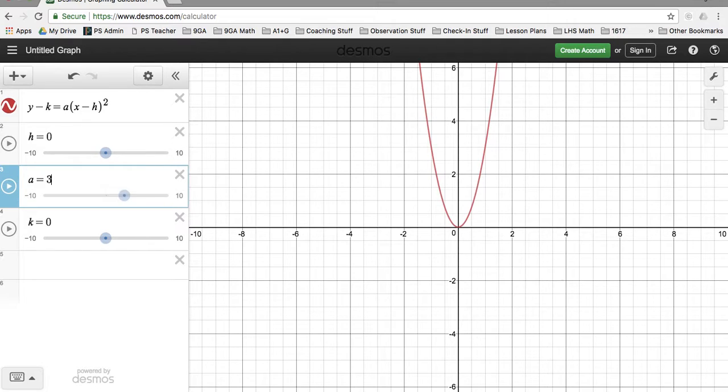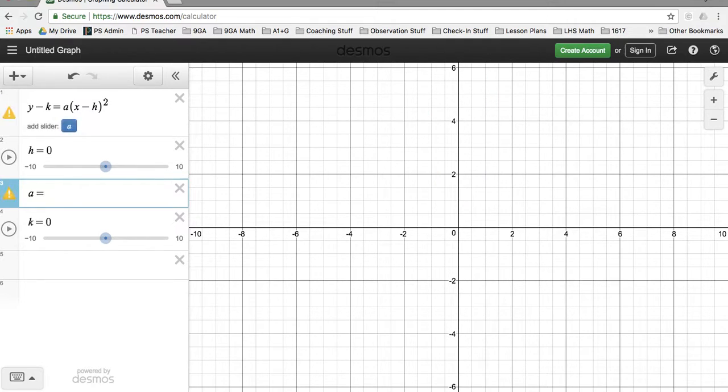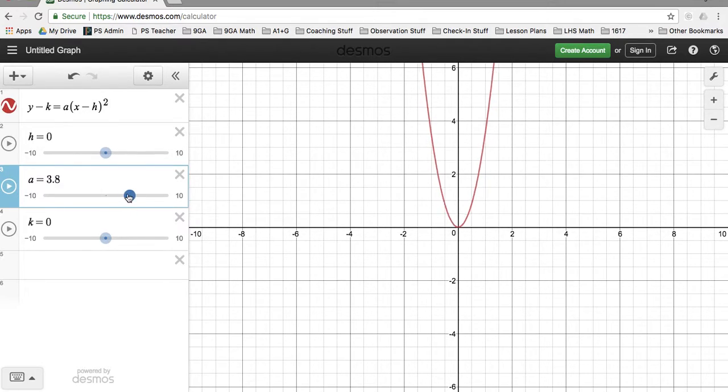So if I change a to like 3, it's going to get narrower, right? See this? It gets narrower and narrower.